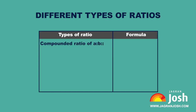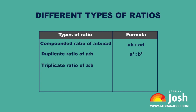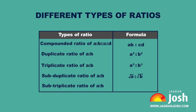The following table explains different types of ratios. Compounded ratio of A is to B and C is to D: the formula is AB is to CD. Duplicate ratio of A is to B: the formula is A squared is to B squared. Triplicate ratio of A is to B: the formula is A cube is to B cube. Sub-duplicate ratio of A is to B: root A is to root B. Sub-triplicate ratio of A is to B: A to the one-third is to B to the one-third.